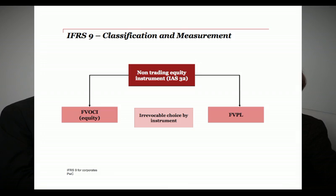Turning to holdings of equity instruments — shares and the like — equity instruments under IFRS 9 will fail the SPPI test, because there are no payments of principal or interest. However, under IFRS 9 there is an exemption — an irrevocable accounting policy choice — to account for subsequent changes in the value of these instruments not in profit or loss, but in other comprehensive income.